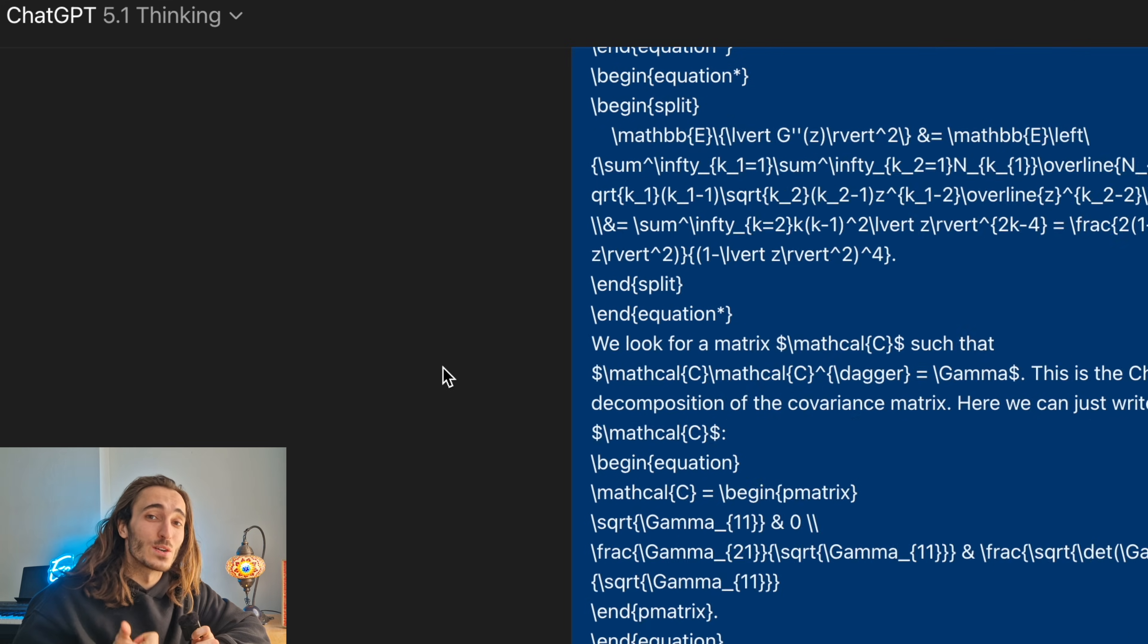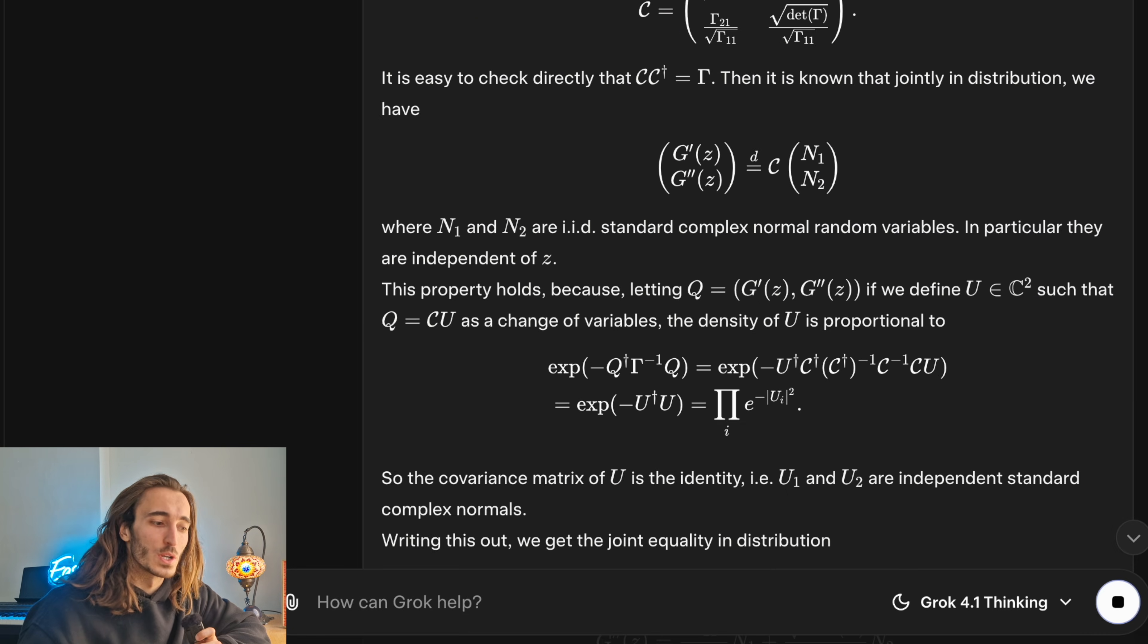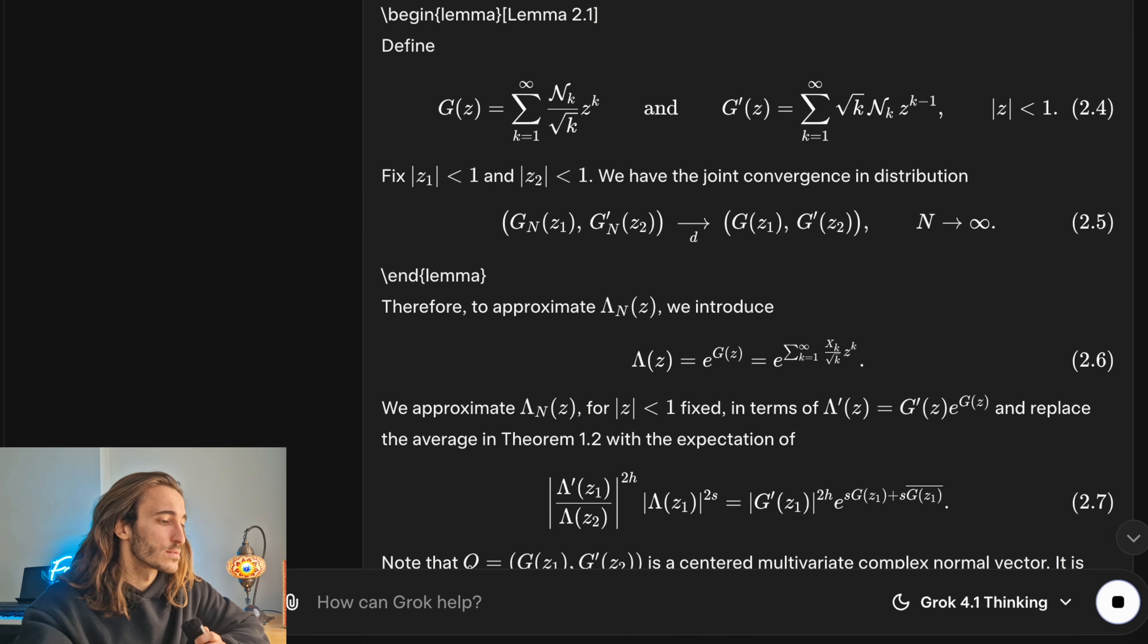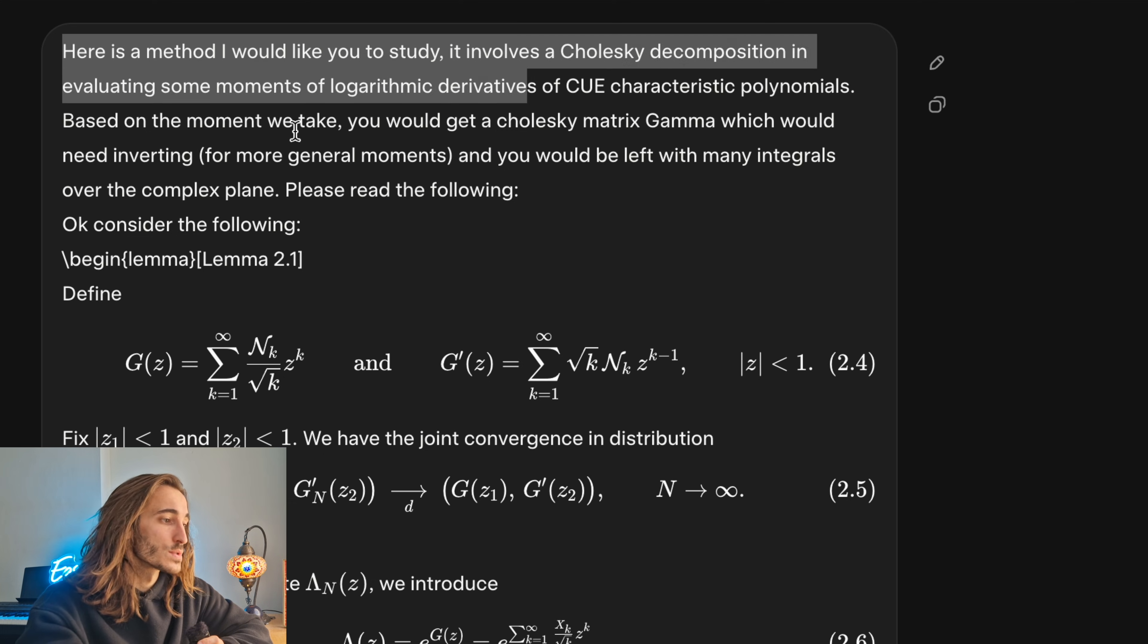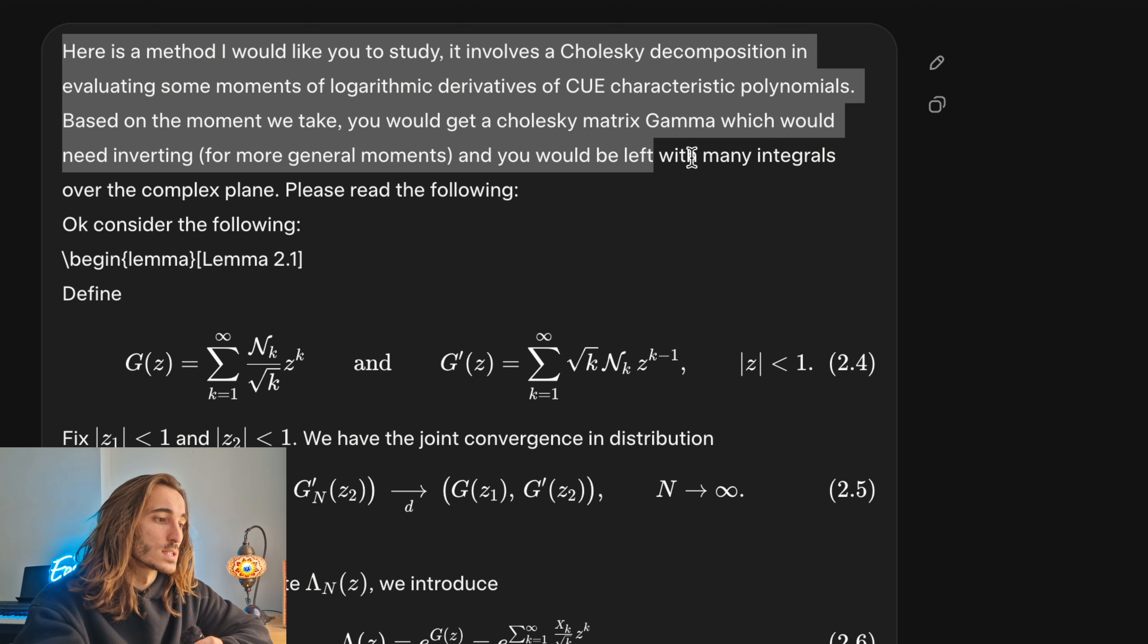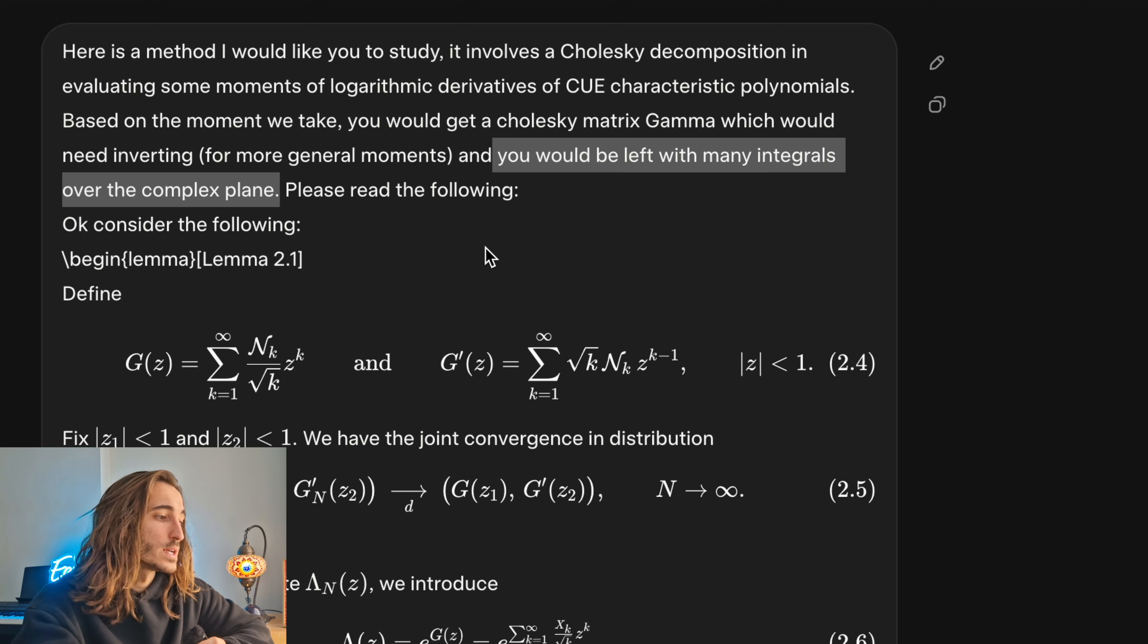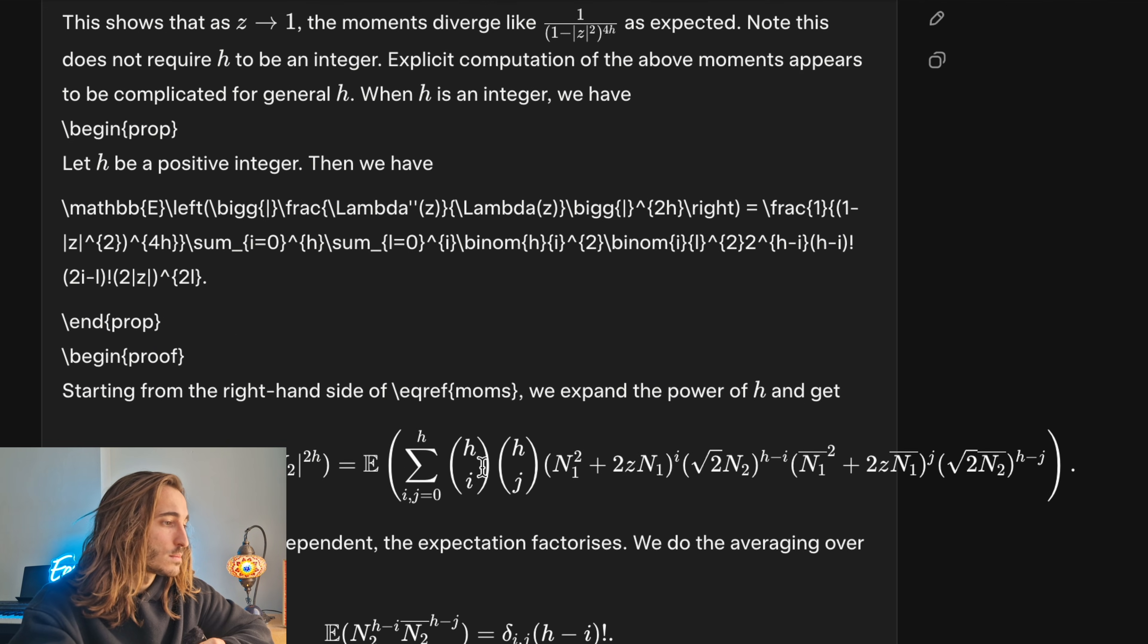Okay, so we've asked GPT 5.1 on thinking mode, Gemini on deep research and thinking mode, so two separate prompts, and we've also asked Grok 4.1 thinking mode, which I guess is a beta version. So just as a summary of the question, so I'm not going to go into huge detail, but I said here's a method I'd like you to study. It involves the Chalvesky decomposition, evaluating some moments of logarithmic derivatives of characteristic polynomials in random matrix theory. I give it some ideas of what should happen. Important thing, you'd be left with many integrals in the complex plane. I explain the whole method, blah blah blah.